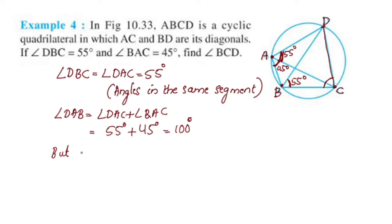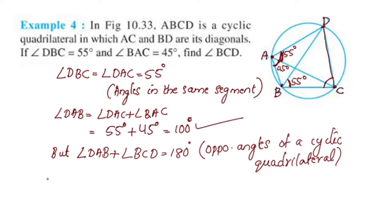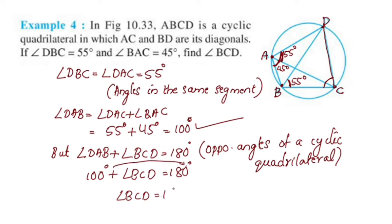Now using the opposite angles property: angle DAB plus angle BCD equals 180 degrees. So 100 degrees plus angle BCD equals 180 degrees. Transposing, angle BCD equals 180 minus 100, which is 80 degrees.